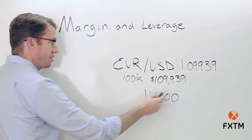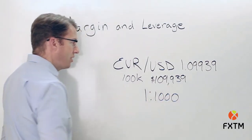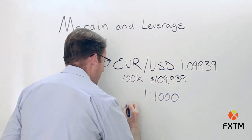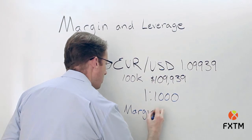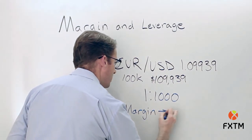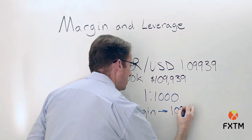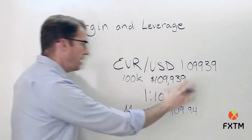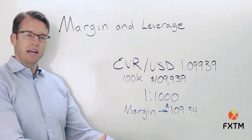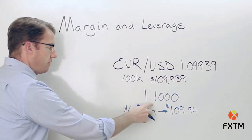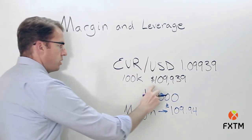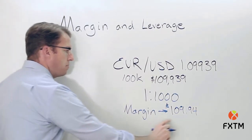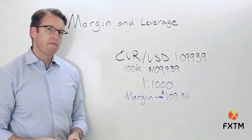We can take that 0.001 and multiply it by the notional value of $109,939, and what we're going to get is a margin amount. So the minimum margin required is going to be $109.94. So one is really a function of the other — assuming your account is denominated in dollars with a leverage ratio of 1 to 1,000, you can calculate the margin requirement from the notional value of the position you want to hold open.